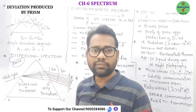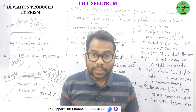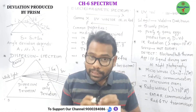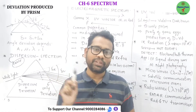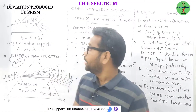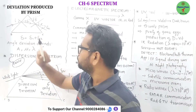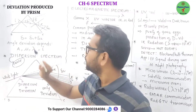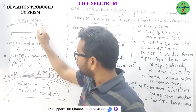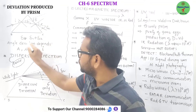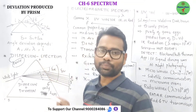What is the angle of deviation? The angle through which an incident light ray gets deviated from its original path is called the angle of deviation. At the first refraction surface, delta 1 is the deviation produced; at the second refraction surface, delta 2. The total deviation delta is obtained by delta 1 plus delta 2.